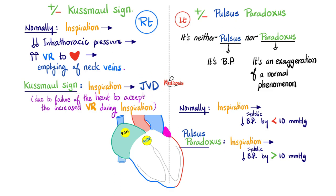As for pulsus paradoxus, normally during inspiration there is a drop in systolic blood pressure by less than 10 mmHg. But in this case, I have a drop in systolic pressure upon inspiration by more than 10 millimeters of mercury — so it's an exaggeration of the normal drop. For Kussmaul sign, on the right side I drew a big circle because jugular venous pressure gets bigger when I breathe in.